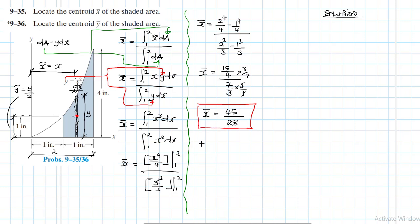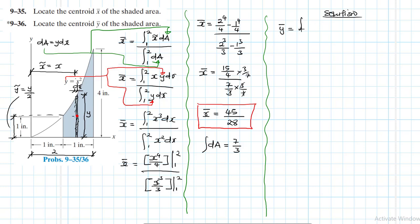Note that the total area is the integral of dA, which we found to be 7/3. We don't need to redo this calculation. Now let's move on to y-bar. y-bar equals the integral of y_c dA divided by the total area. Our y_c is y/2, and dA is y dx, so we integrate from 1 to 2, divided by the total area 7/3.